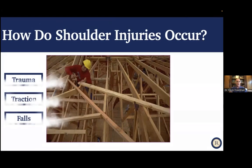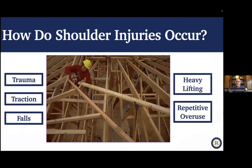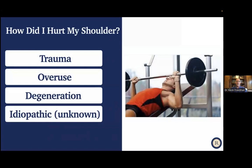How do shoulder injuries occur? There's trauma, including falls or a traction injury with the arm down at the side, as well as heavy lifting. But the most common thing I see is repetitive overuse — either overhead, through throwing, or everyday use — which can cause degeneration. Patients wonder whether their injury came from trauma, overuse, or just wear and tear over time. Then there's what we call idiopathic, meaning unknown — certain things happen in the shoulder without a clearly known cause.